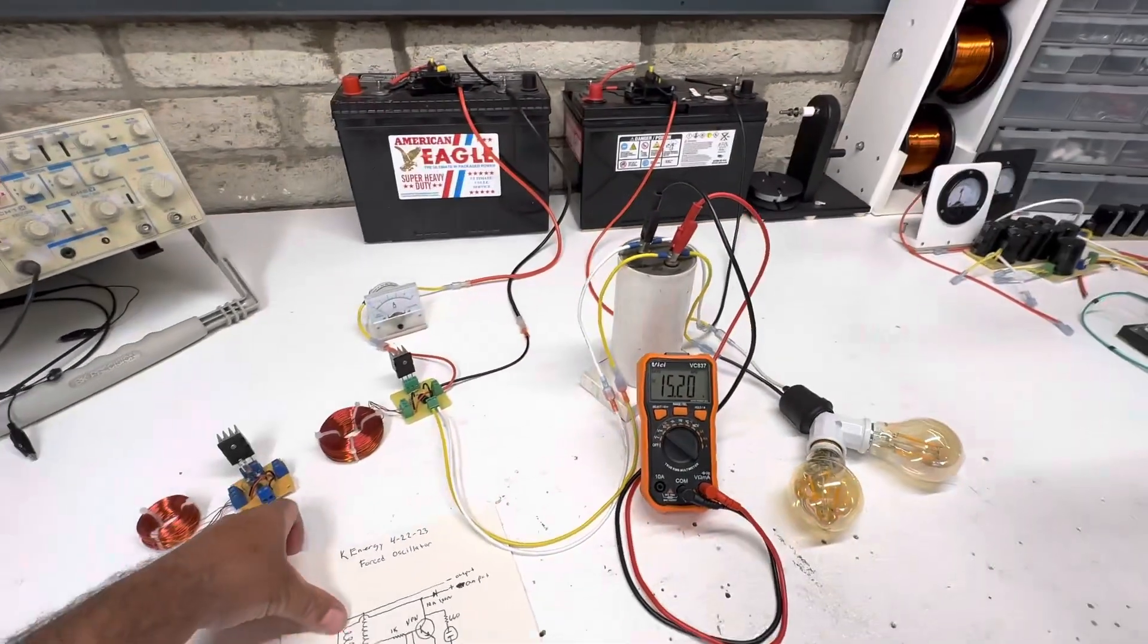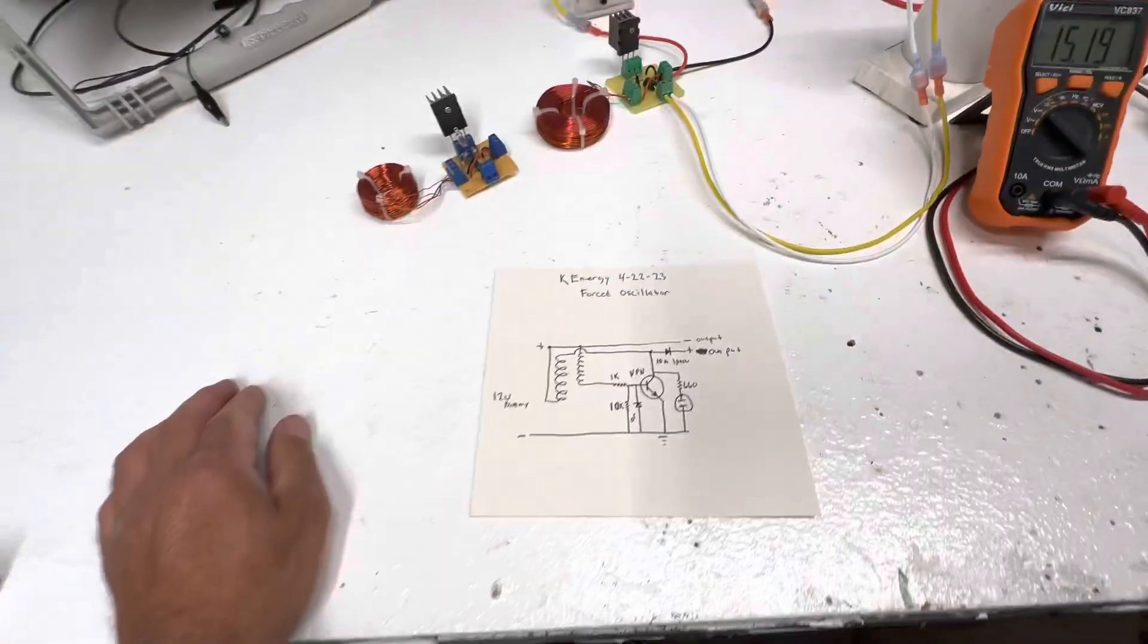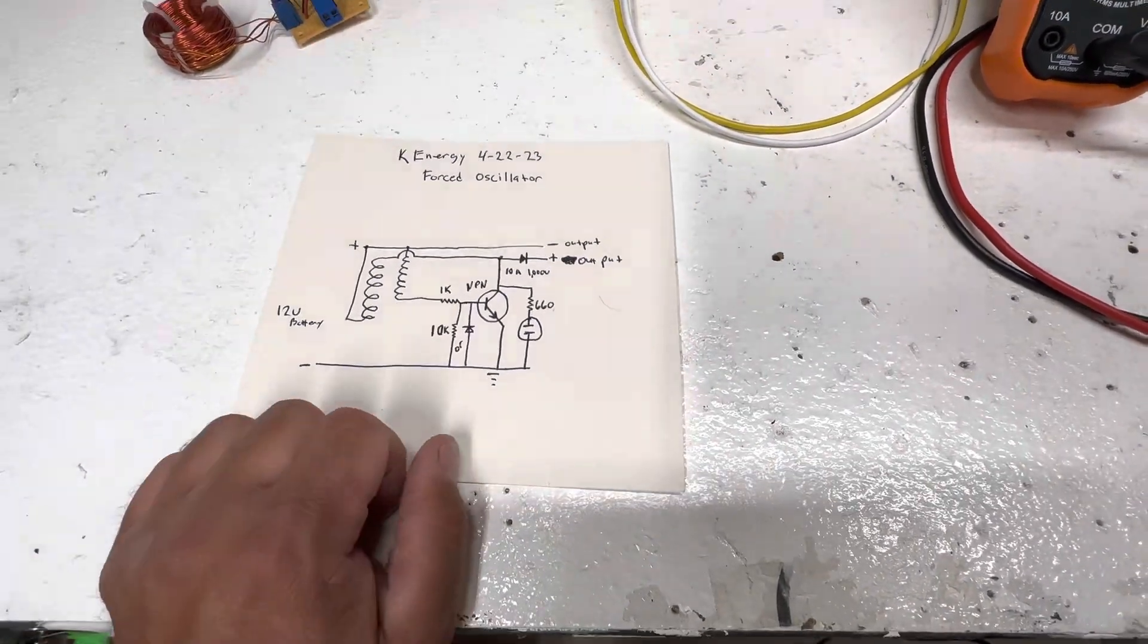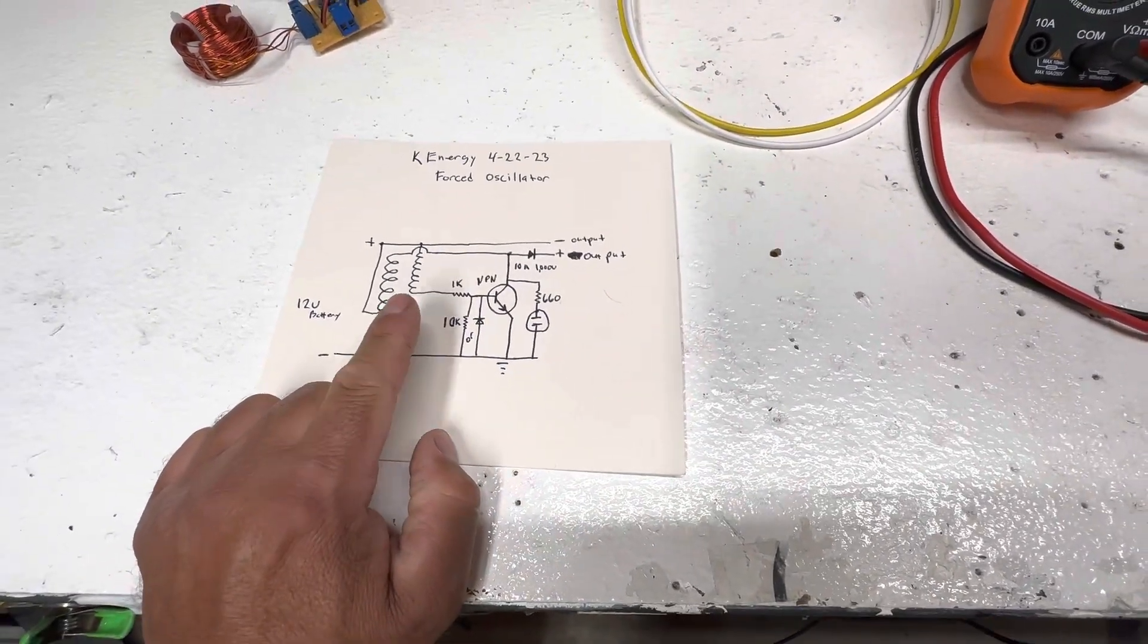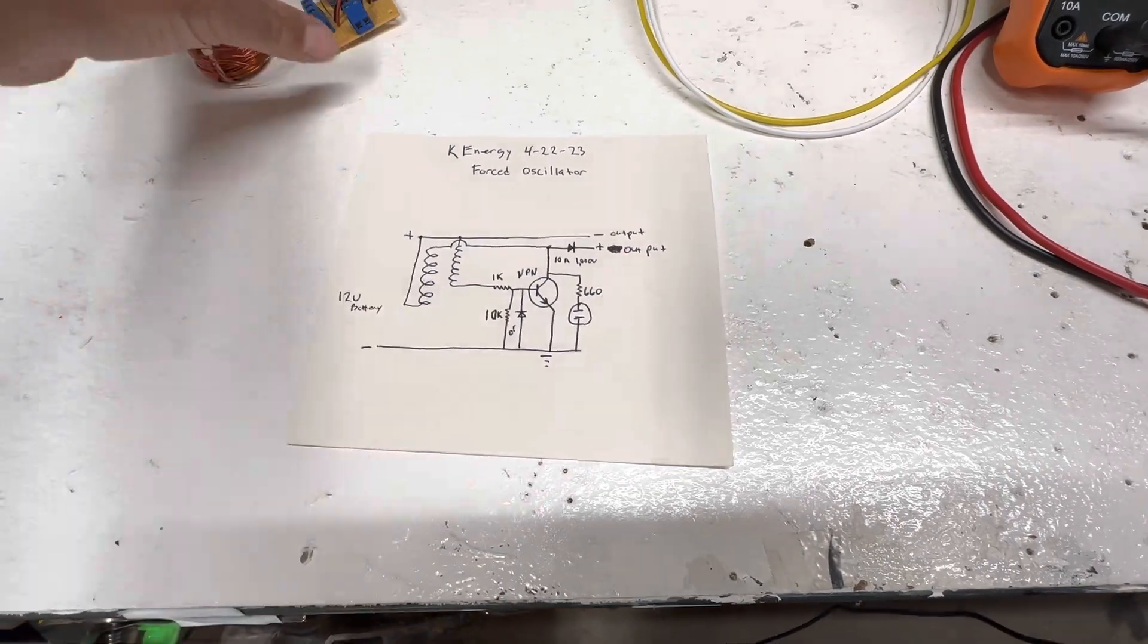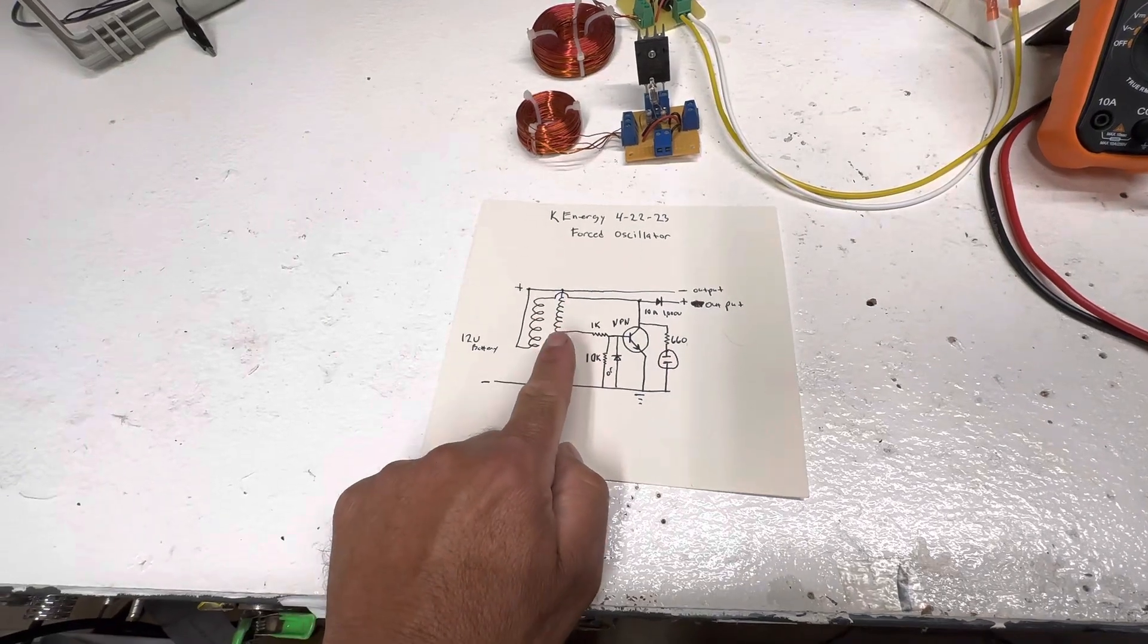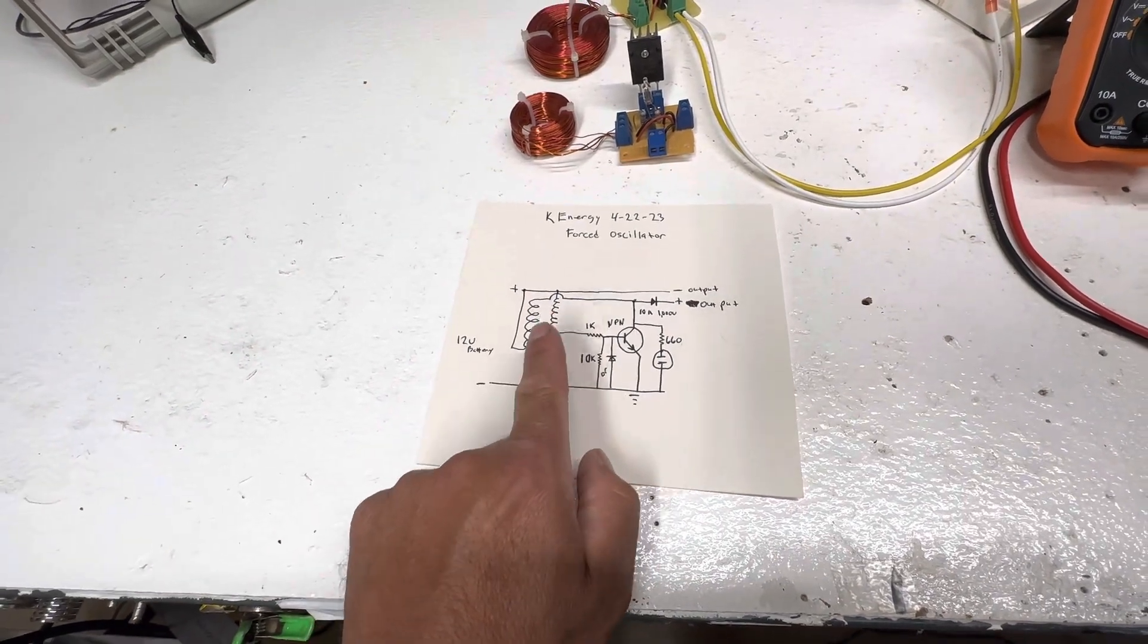So this is the circuit right here. You guys could screenshot it or whatever you have. The two coils, just like on this, they're opposite, so one goes this polarity and one goes the other polarity.